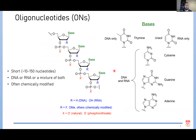Let's talk about oligonucleotides and their general structure first. Oligonucleotides are composed of three major components: mainly the sugar, the phosphodiester backbone, and the nucleobase. They are typically composed of 10 to 150 nucleotides and can be DNA, RNA, or a mixture of both. They can often be chemically modified, particularly at the 2' position of the sugar as well as at the phosphodiester backbone.